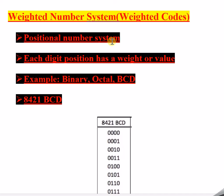Each digit of a particular number will have a weight, hence it is called a weighted number system. Since each digit of a number has a weight, we can say it is a positional number system — each digit position has its own weight or value. We will slowly try to understand this; it may not be clear right now but after some time you will be able to understand.